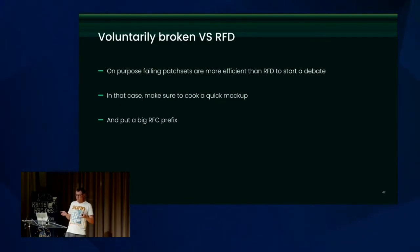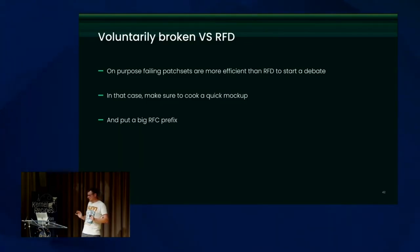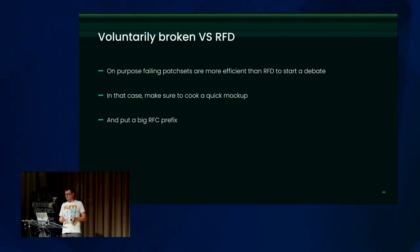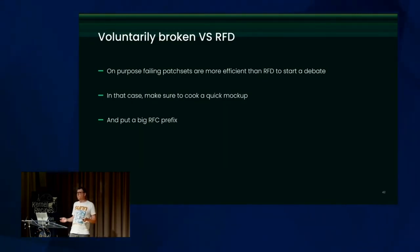Voluntarily broken patch sets are also more efficient than RFDs. RFDs are emails asking 'which direction should I take to solve this problem?' — those emails tend to be giant, TLDR. I believe they are usually better replaced by a voluntarily broken patch set: you on purpose take a wrong direction, put a big RFC prefix on your patches just to say 'I know it's not the right direction, but I post it anyway to see if somebody has a better idea.' Just make sure not to spend too much time on it, and mention on the cover letter that you know it's broken.